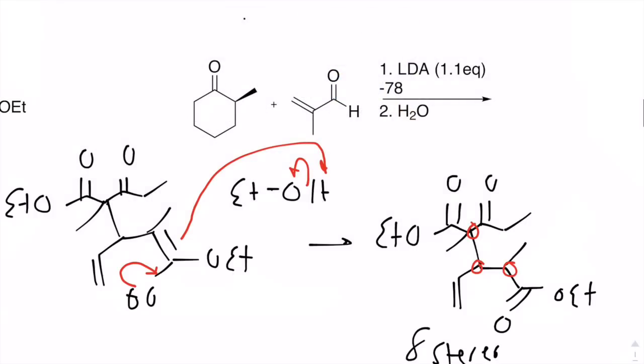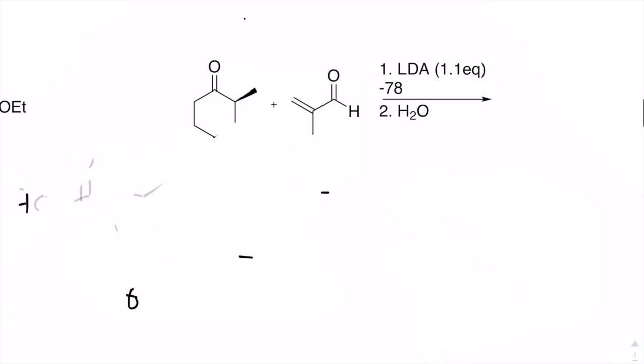So that is the product of this reaction. Just remember that we can deprotonate at the alpha position because of how acidic those protons are, and then add it into the beta position of a conjugated molecule to extend the carbon chain in this fashion.